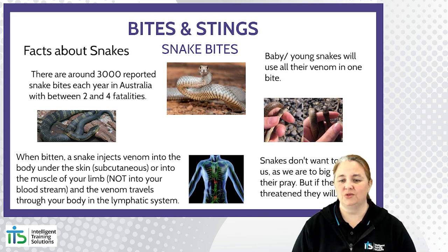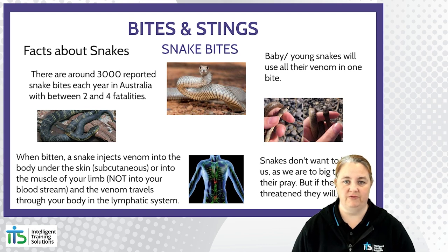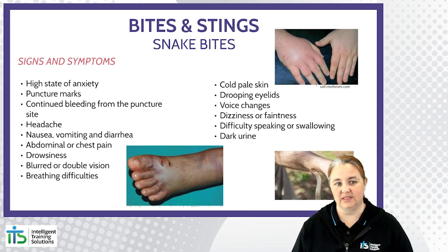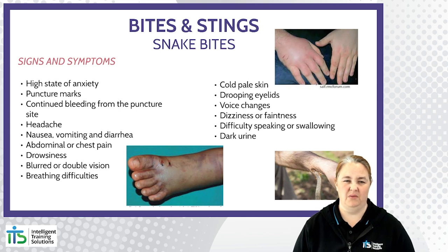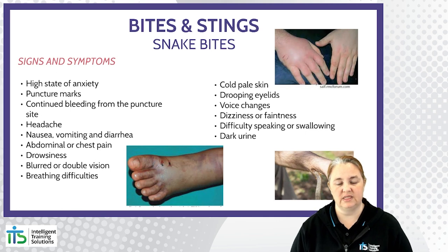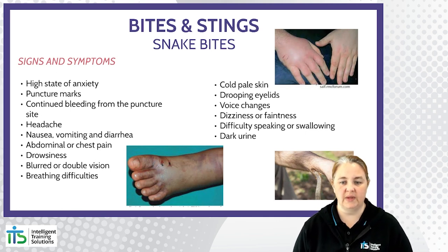Snakes don't want to bite us — we are too big to be their meal — but if they feel threatened, they'll give quite a bit of venom, and any snake bite venom is always dangerous. Signs and symptoms vary from snake to snake and depend on how much venom is in the casualty's system. They might include a high state of anxiety, puncture marks, continued bleeding from the puncture site, headache, nausea and vomiting, abdominal or chest pain, drowsiness, blurred or double vision, breathing difficulties, cold pale skin, drooping eyelids, voice changes, dizziness or faintness, difficulty speaking or swallowing, and dark urine.